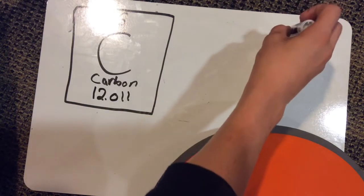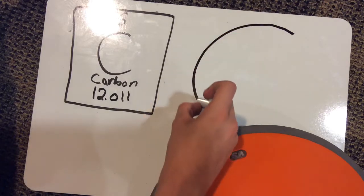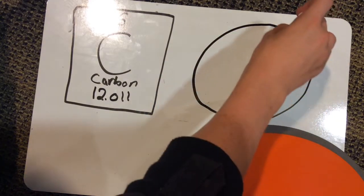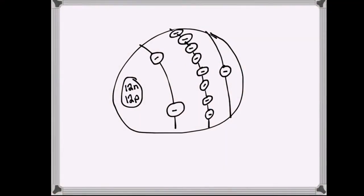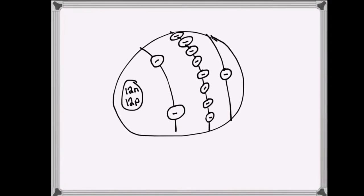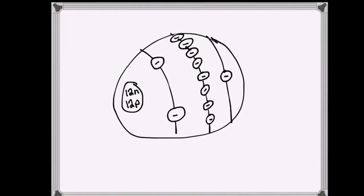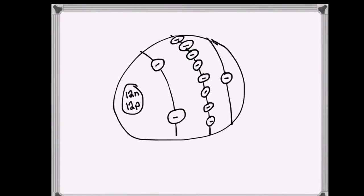Then you draw the circle, the atom. Since there's 6 of each in it, there's 6 neutrons and 6 protons, and then you have to draw that in the circle.